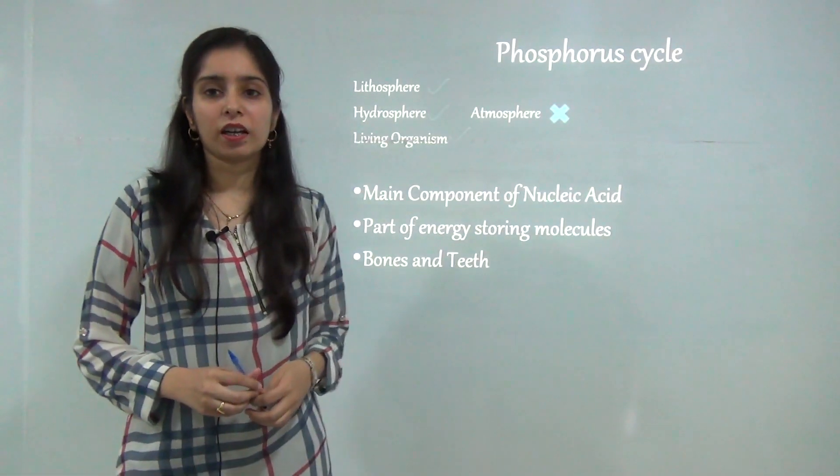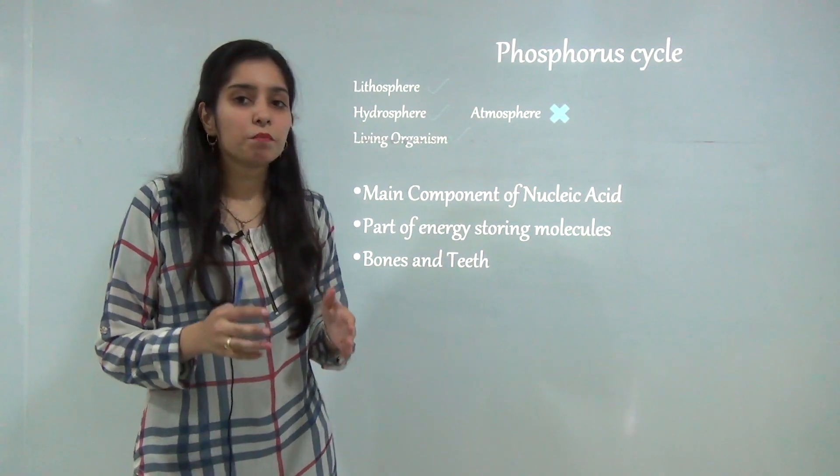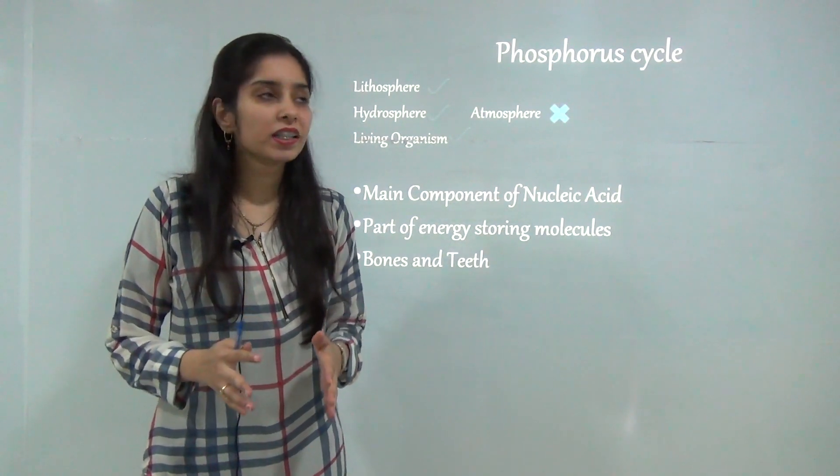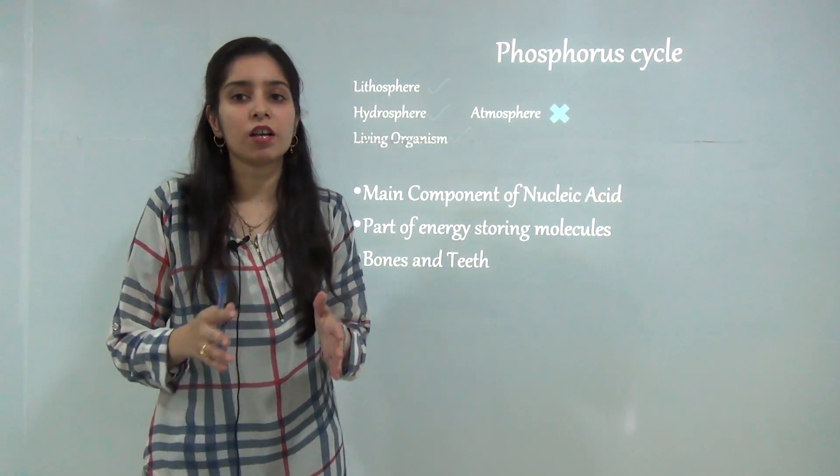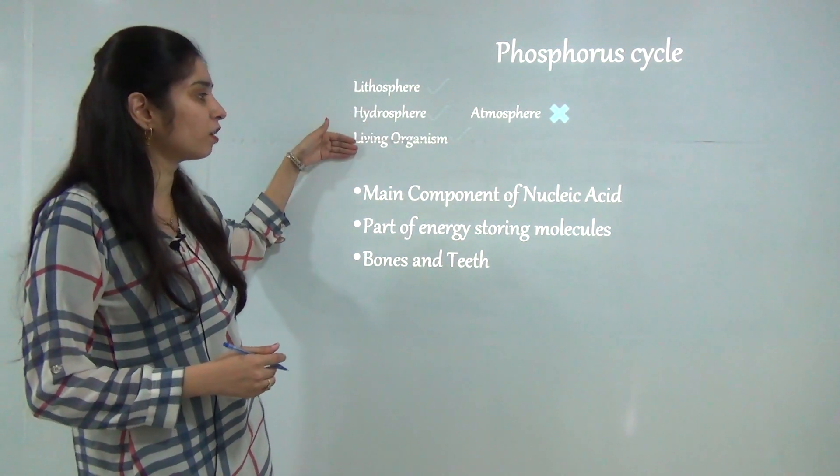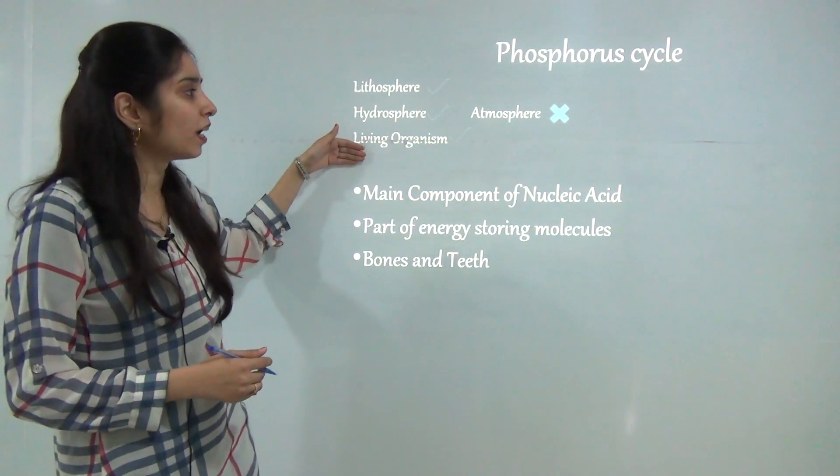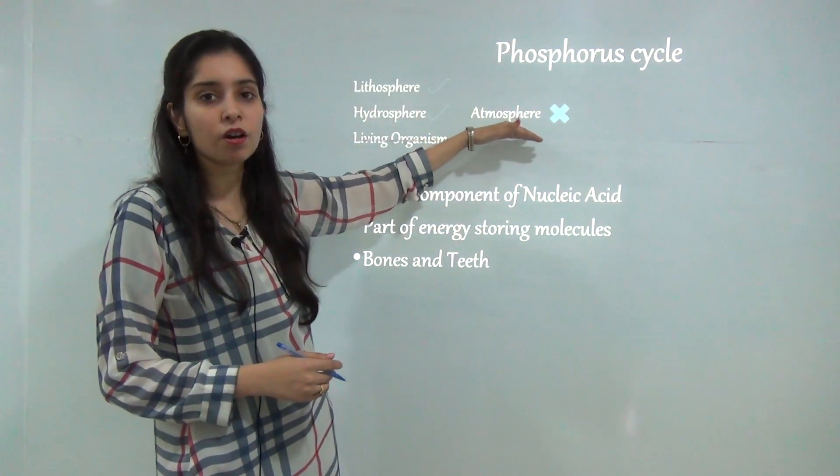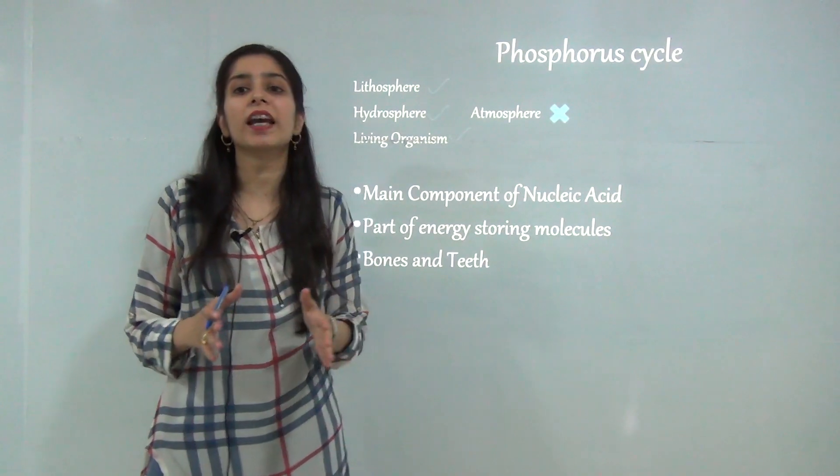First, phosphorus cycle. Phosphorus cycle is a biogeochemical nutrient cycle in which phosphorus is transferred into different segments of environment like lithosphere, hydrosphere and living organisms, but it cannot transfer into the atmosphere because phosphorus is not found in gaseous form.